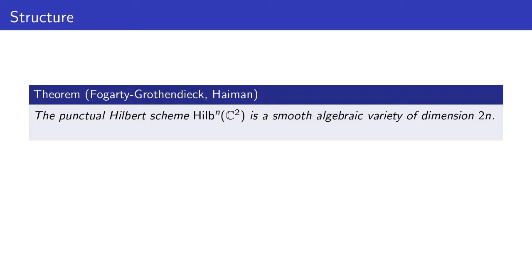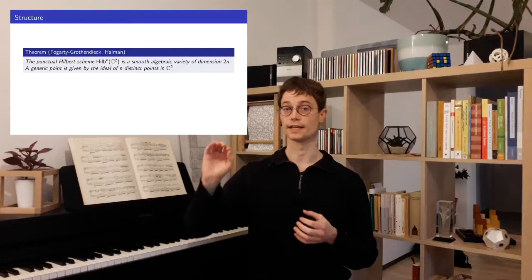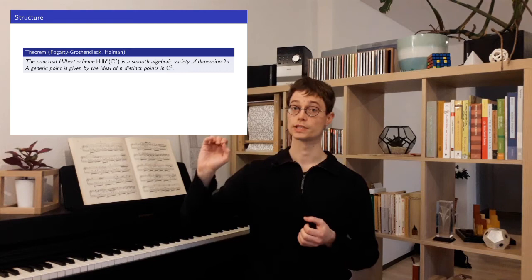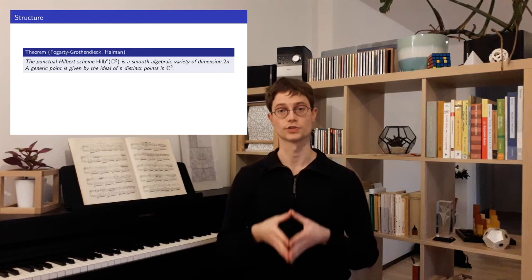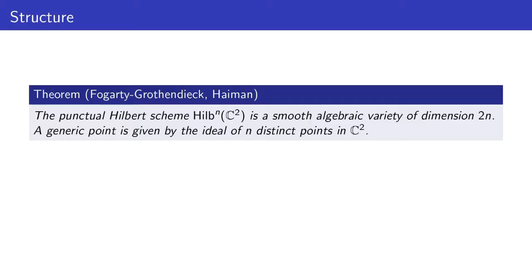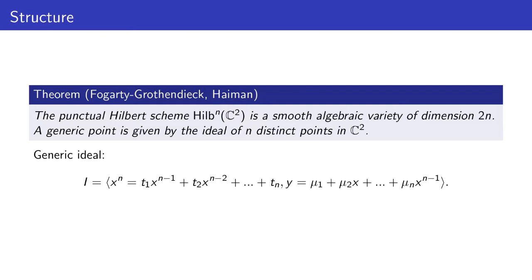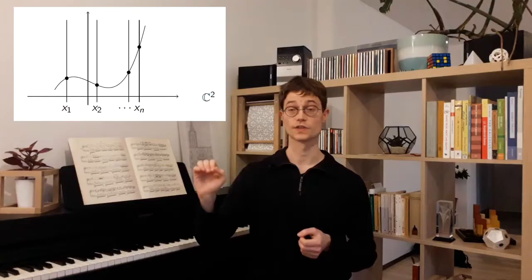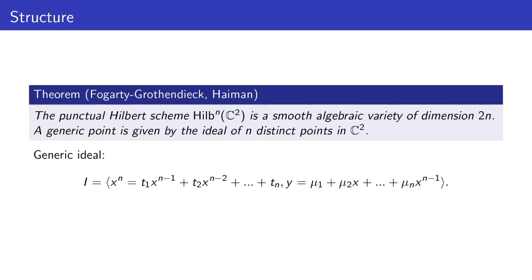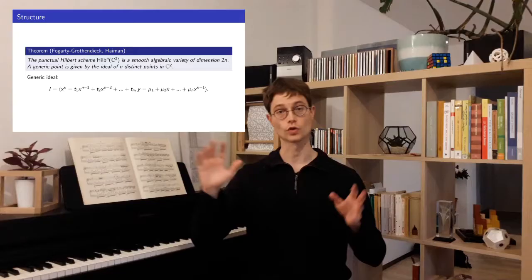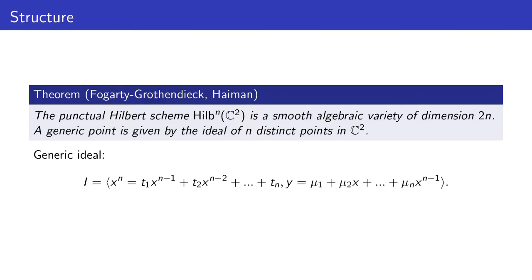To understand the structure of the whole punctual Hilbert scheme, there is a theorem due to Grothendieck and Fogarty, explained in more detail by Haiman. The punctual Hilbert scheme is actually a smooth algebraic variety of dimension 2n. Furthermore, a generic ideal is given by the ideal generated by n distinct points of C², and this forms an open dense subset of the punctual Hilbert scheme. A generic ideal has two generators: one polynomial only in x, corresponding to the vertical lines, and a second generator y equals some polynomial in x, the Lagrange interpolation polynomial. There are 2n variables tᵢ and μᵢ, reflecting that the punctual Hilbert scheme is of dimension 2n.